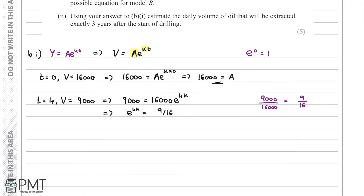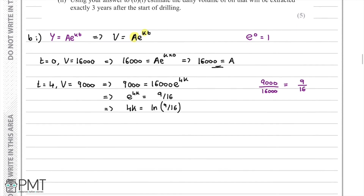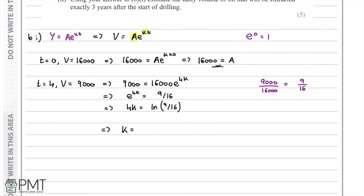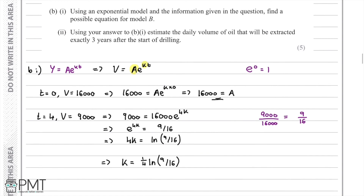To isolate K, we take the natural log of both sides. Since ln of an exponential equals the power, we have 4K equals ln(9/16). Dividing both sides by 4 gives K equals one quarter times ln(9/16). We've now worked out both A equals 16,000 and K equals one quarter ln(9/16).